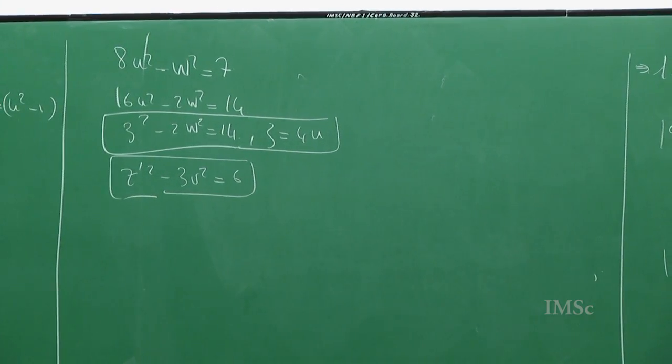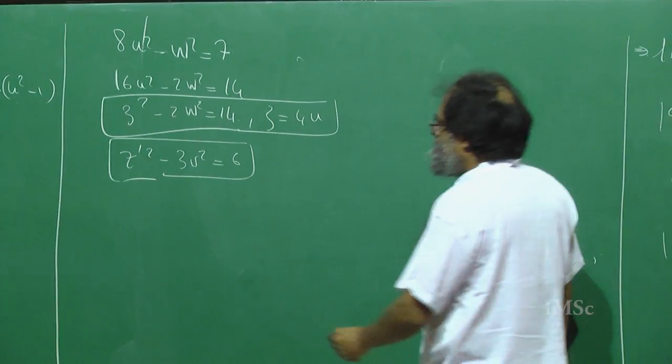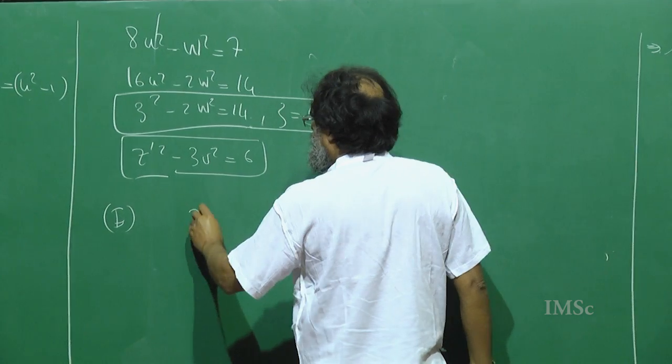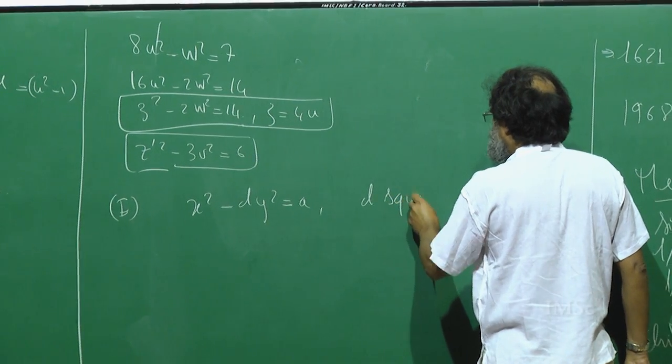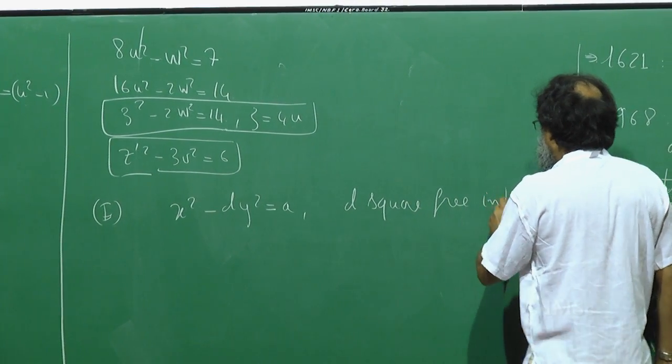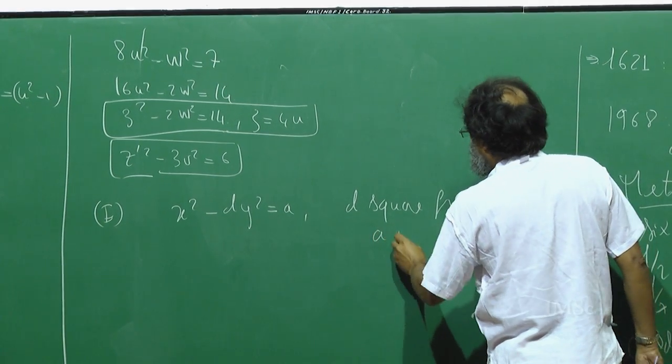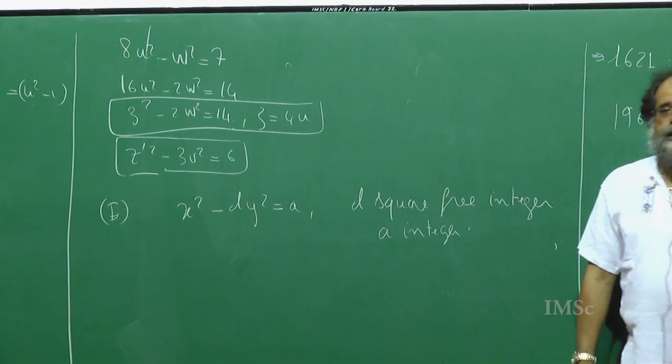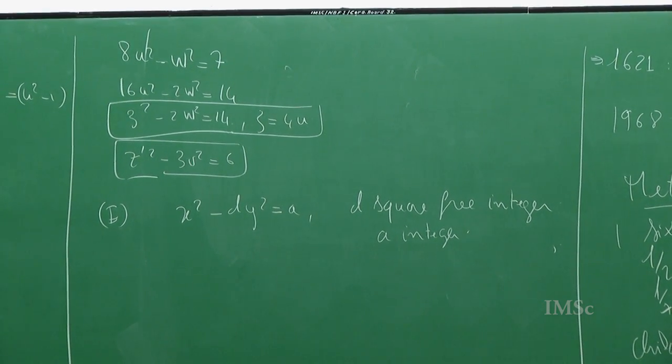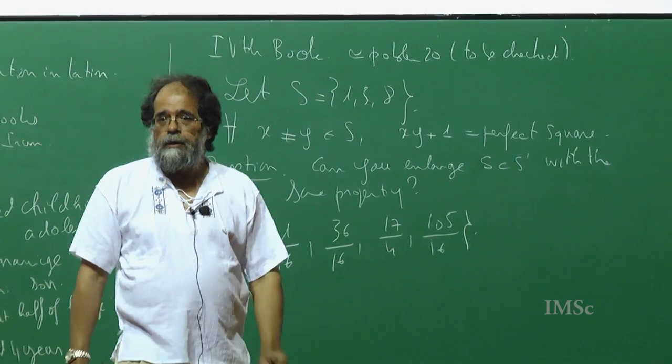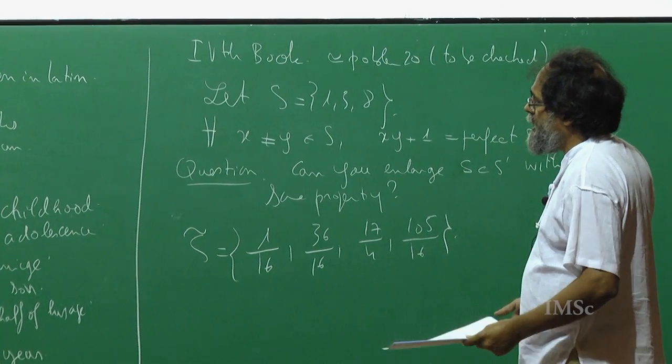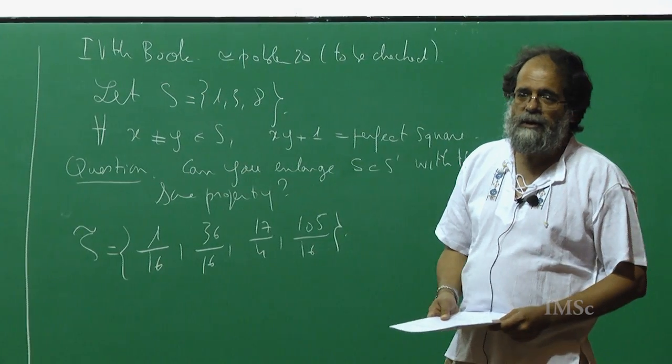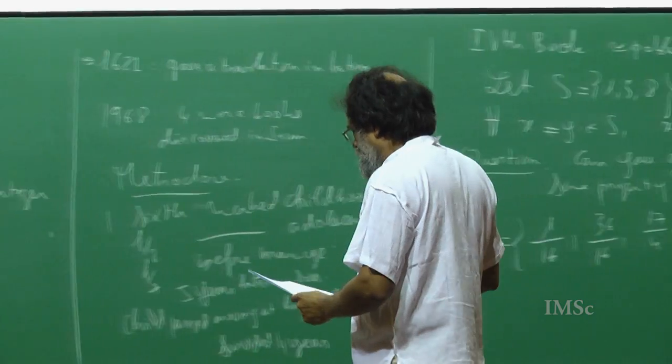What you get is an equation of this form: x square minus D y square equals A, with D a square-free integer and A an integer. This is a very familiar, very classical equation that you may have even seen in your classes. It is called a Pell equation.